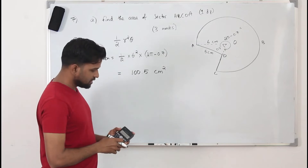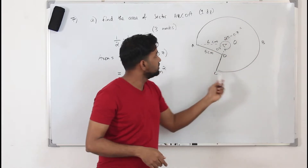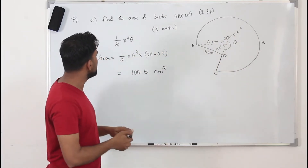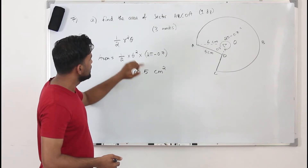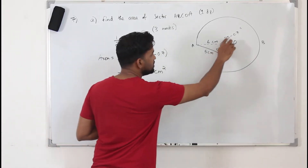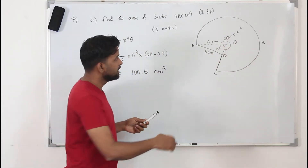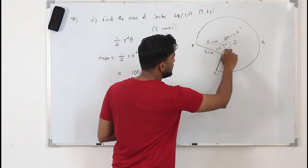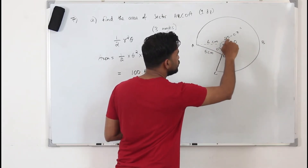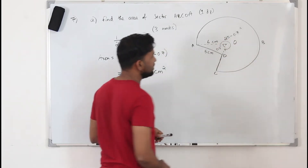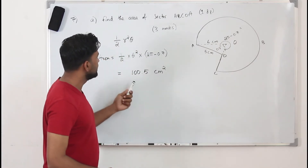So this is the area of the major sector. For Part A worth three marks: write the formula, substitute everything, and find the result. The tricky part is that the angle is not given directly, so you need to know the whole angle is 2π, and the major sector angle is 2π minus the little angle 0.7 radian.